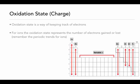Another way of thinking of this is what we did with ions. When an atom loses or gains electrons, it's going to become an ion and have an overall charge because of the imbalance in the number of protons and electrons. This is the oxidation state — it represents the charge when an atom has gained or lost electrons.